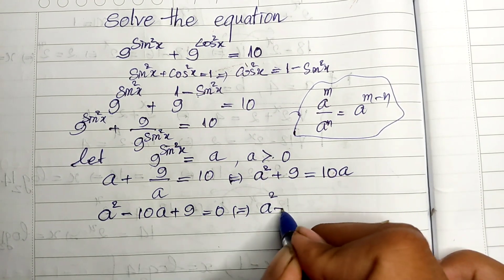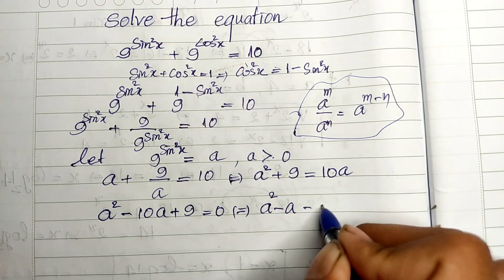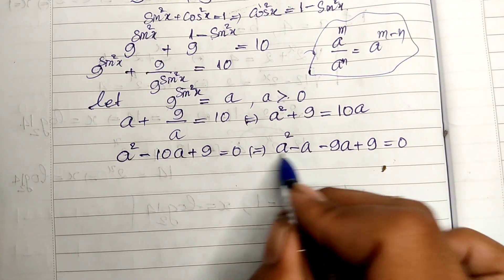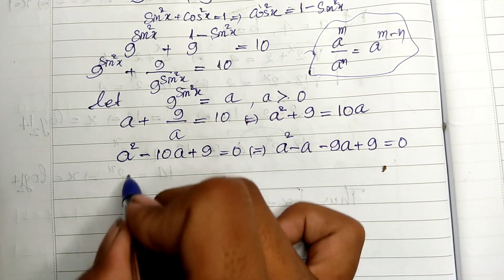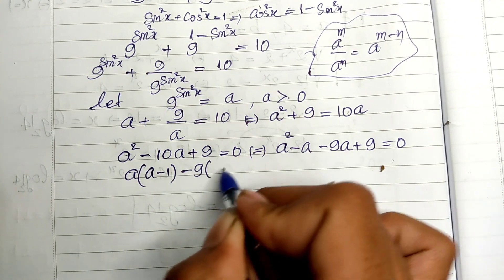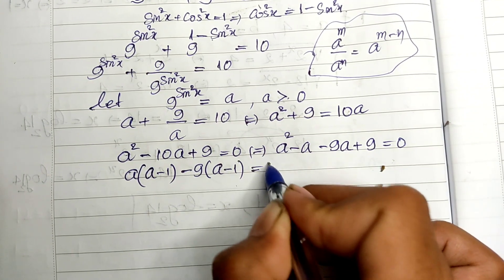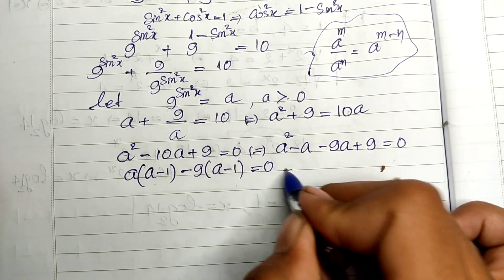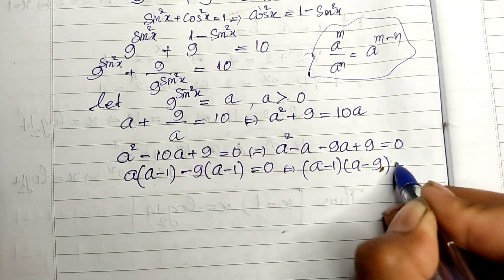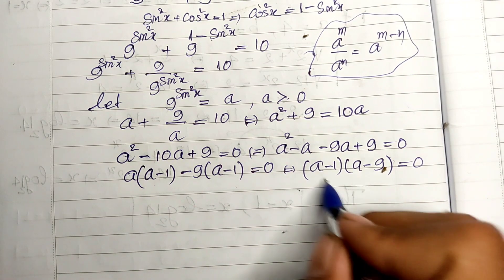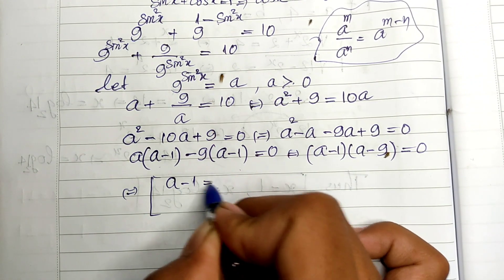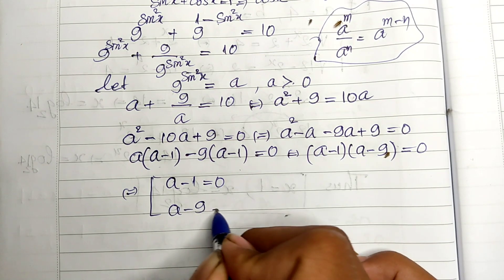I move 10a from the right side to the left hand side, so I get a squared minus 10a plus 9 equals 0. I factor this as a squared minus a minus 9a plus 9 equals 0. Taking a out of the first two terms and -9 out of the last two, I get (a minus 1)(a minus 9) equals 0.